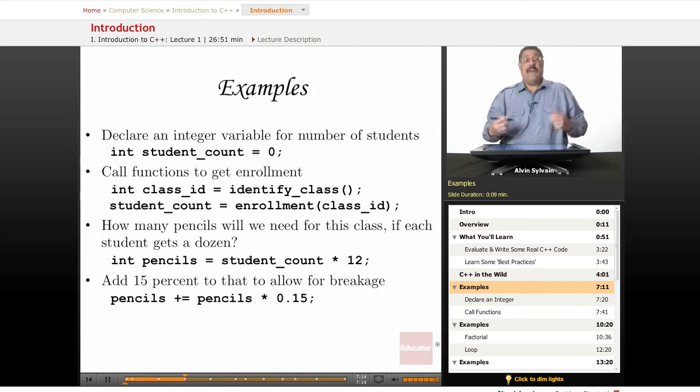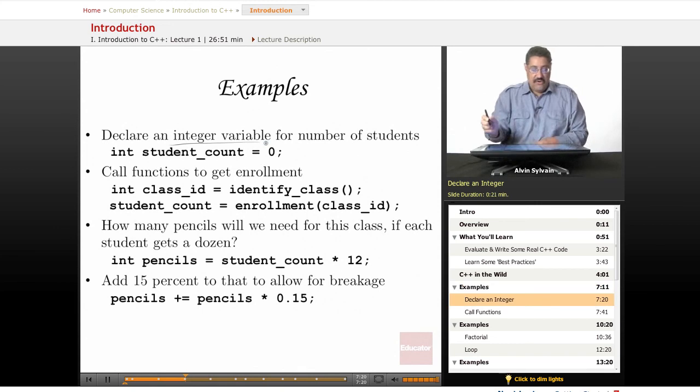I have some quick examples of how to use C++, how you write some C++ code. So here we have, we're declaring an integer variable. We want to hold the number of students in this class. So we have int, as we're declaring this to be an integer. Student count, that's just the name that I thought of. There's different names you could come up with. You can call it sc if you want. But student count's a little bit more useful, and we're initializing it to zero.